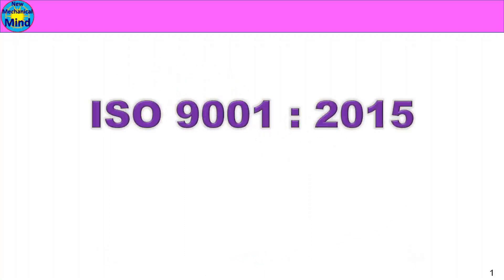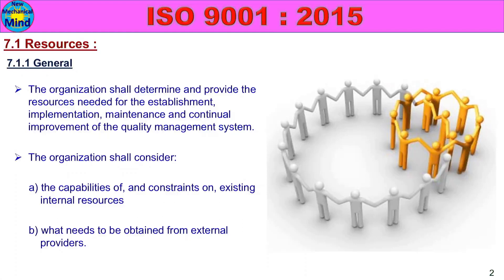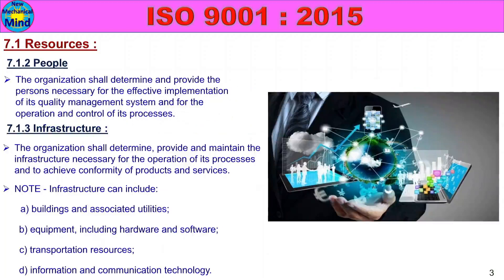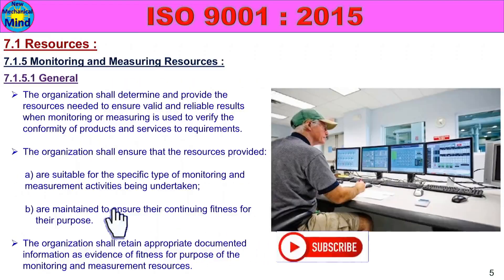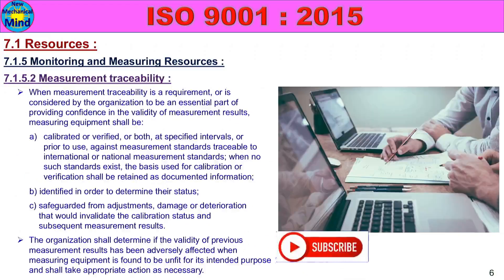In this video, we will see ISO 9001:2015 Part 10. We will cover Clause 7.1 Resources, including subclasses: 7.1.1 General, 7.1.2 People, 7.1.3 Infrastructure, 7.1.4 Environment for the Operation of Processes, and 7.1.5 Monitoring and Measuring Resources.